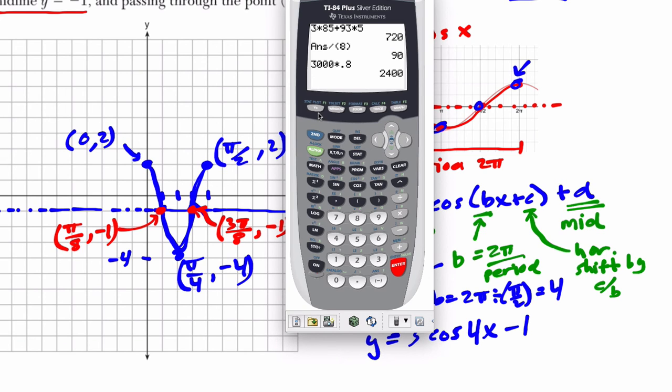So in the calculator, you go to y equals, enter your equation, clear up any old ones there. I'm going to type in 3 cosine of 4x, close parentheses, minus 1. Then make sure in mode that you're in radians, because we're working in radians here. And then I go to zoom, and I go to choice 7, which is trig. And I see what I get. I get this right here.